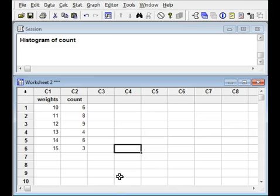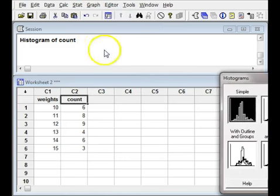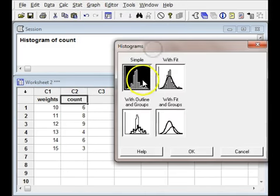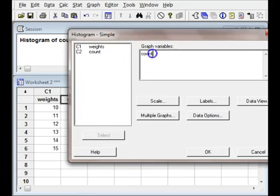Welcome to Minitab for the creation of histogram. We have the same count and weights given for the example in your module, and we are going to create a histogram for the same. Let's go to graphs, select histogram, click on simple, and the graphical values - I want to see which count is most occurring. So I will select count and select OK.